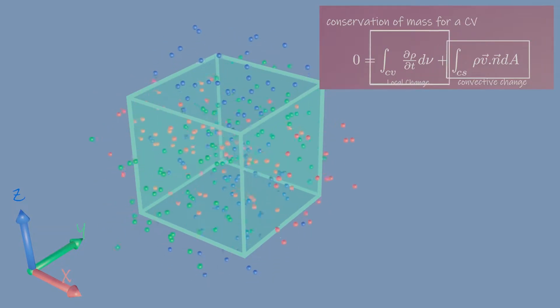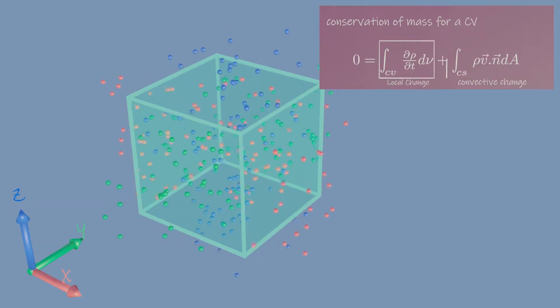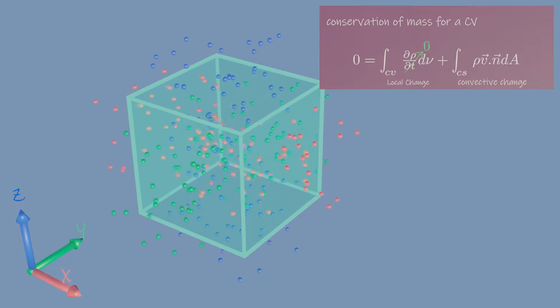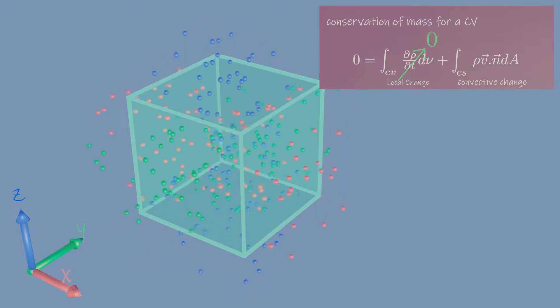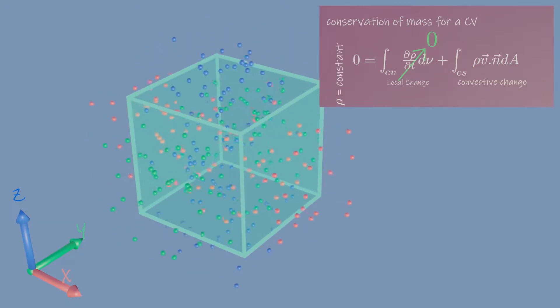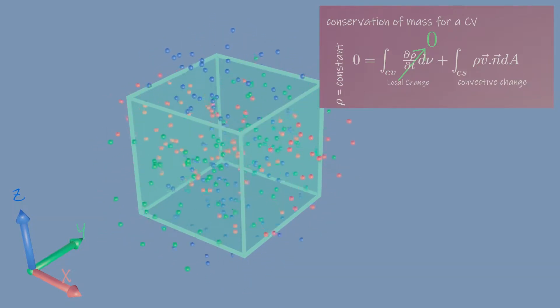So the first term on the right side is related to volume, and if there is no local change of the fluid mass inside this cube, then this term shall be zero. This is valid for incompressible fluid like water. It has constant density, so there is no local change in mass within its volume.